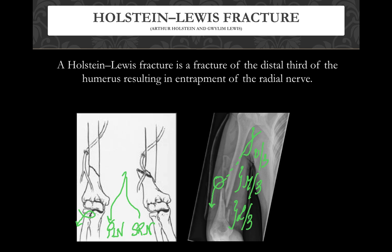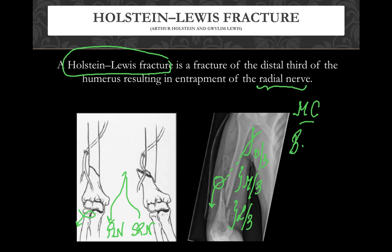Fractures of the lower one-third of the humerus that entrap the radial nerve are called the Holstein-Lewis fracture. In AIIMS May 2016, an image of a spiral fracture of the lower one-third of the humerus was shown and the question asked what nerve is involved — the answer was radial nerve. Two more things to remember about the radial nerve: it is the most commonly damaged nerve in the human body, and it has the best prognosis amongst all peripheral nerve injuries.